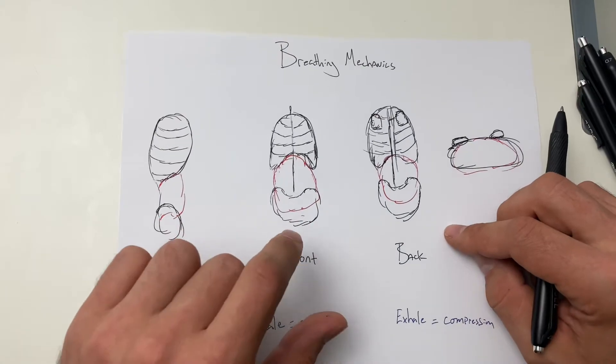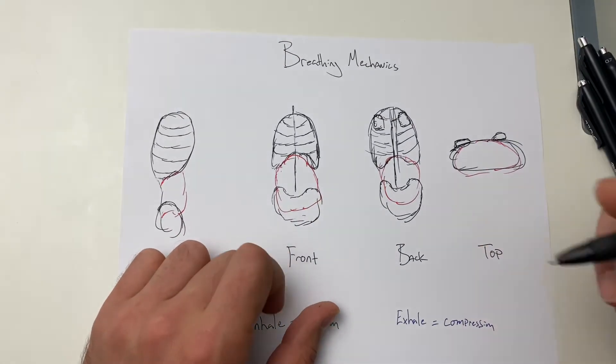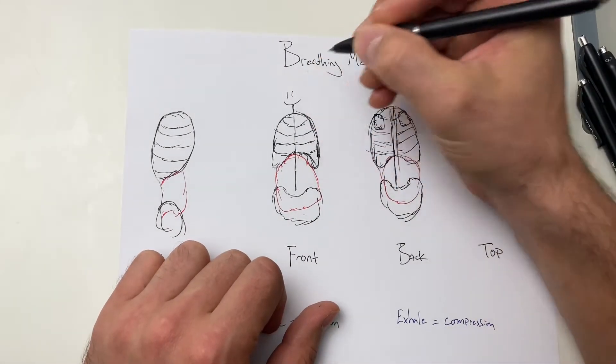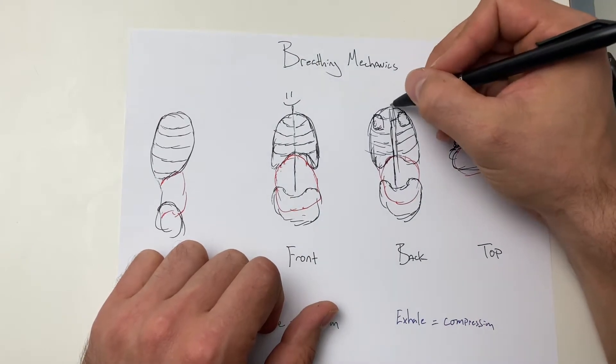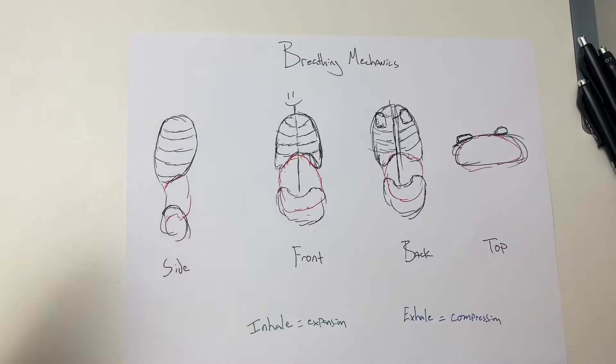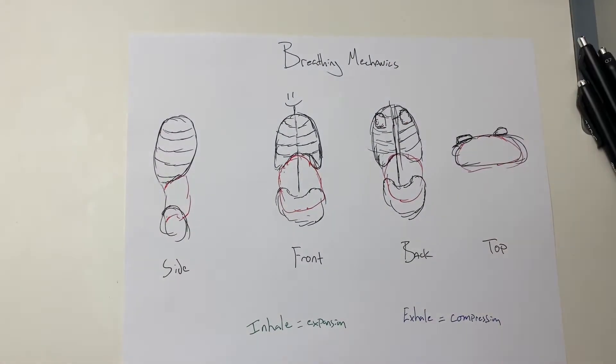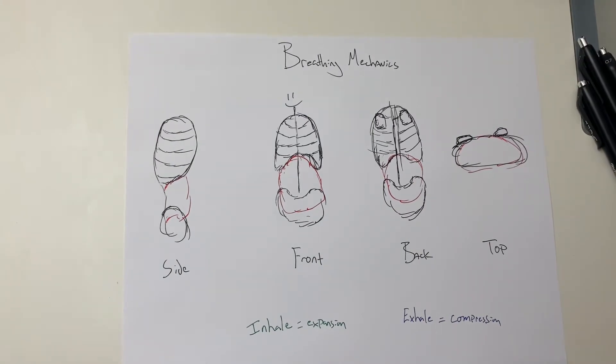So we have a side view, looking at it from the front. This is someone's face would be here, this would be the back of their head here, hence back. And then this is if we cut you in half and we're looking down from the top.